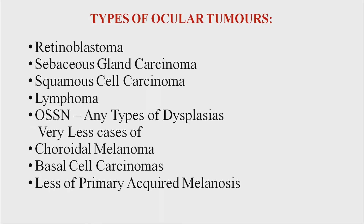We see a fair number of ocular tumors. The commonest is retinoblastoma, and we sometimes get very advanced cases. Other lesions include sebaceous gland carcinomas, squamous cell carcinomas, lymphomas, and OSSN. We get fewer cases of choroidal melanomas, basal cell carcinomas, and PAMs. These are a few of the cases we would like you to see.